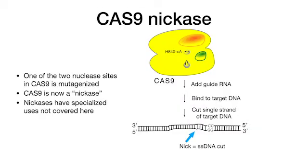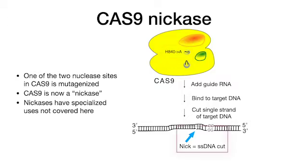Let's consider the nickase modification. Mutagenesis of one endonuclease site leaves the other one active. Only a single-stranded cut — a nick — will result. Therefore, we call this enzyme a nickase. Targeted nickases are useful, but we will not cover their uses here.